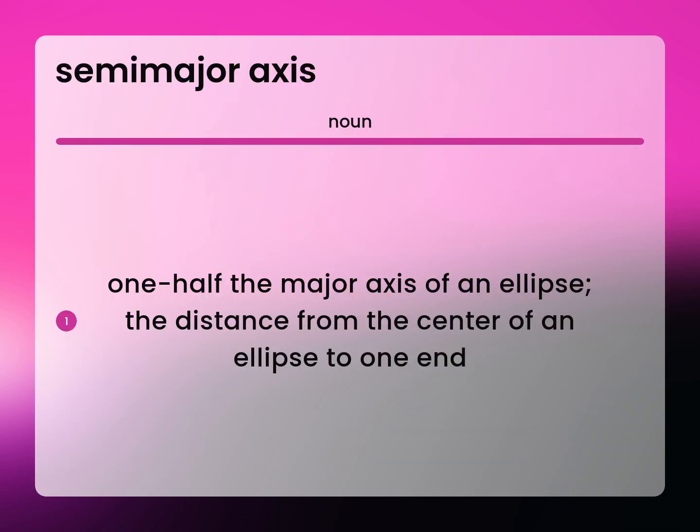One half the major axis of an ellipse. The distance from the center of an ellipse to one end.